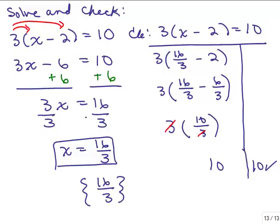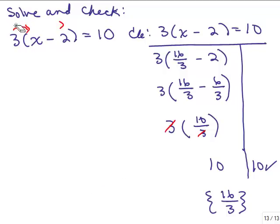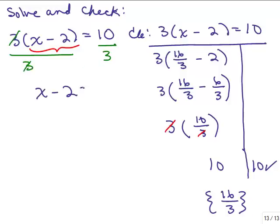This is only one way to solve this problem — there are actually more than one way. I'm going to do this one again with a slightly different approach. Without doing the distributive property, this problem basically says 3 times something equals 10. So if I know what that something is, I could divide both sides by 3 first. The 3s cancel and you get x minus 2 equals 10 thirds. This is a non-traditional way of solving; most people do the distributive property to avoid working with fractions.